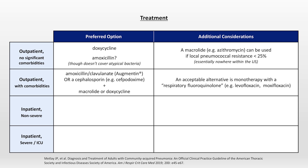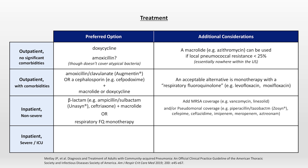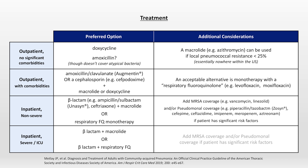For inpatients who don't meet severe criteria, a moderately broad intravenous beta-lactam is preferred, such as ampicillin-sulbactam, known as unasyn, or ceftriaxone, plus a macrolide or a respiratory fluoroquinolone as monotherapy. The clinician should add MRSA coverage and/or pseudomonal coverage if the patient has significant risk factors for those pathogens. For those with severe pneumonia, most of whom should be admitted to the ICU, recommended regimens include a beta-lactam plus macrolide, or a beta-lactam plus a respiratory fluoroquinolone. No monotherapy here. And once again, add MRSA and/or pseudomonal coverage in the presence of risk factors.